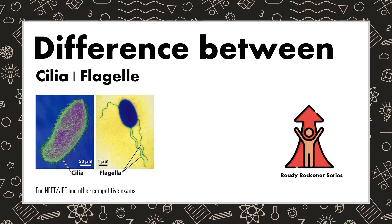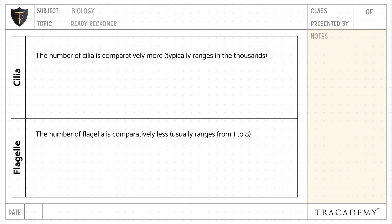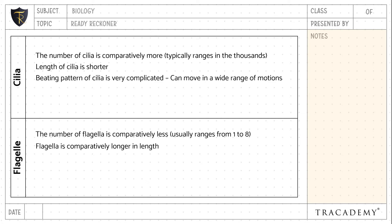Let's understand a few key differences between cilia and flagella. The number of cilia is comparatively more, typically ranging around 1000, compared to flagella, whose number is comparatively less, usually ranging from 1 to 8. The length of cilia is shorter, whereas flagella are comparatively longer. Cilia have a complex beating pattern with a wide range of motion.